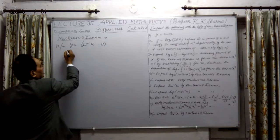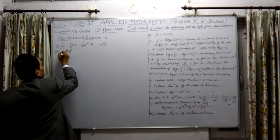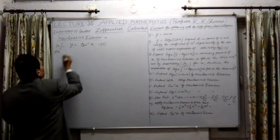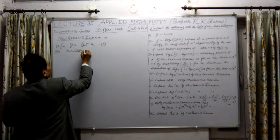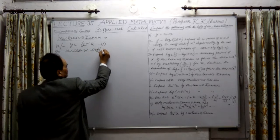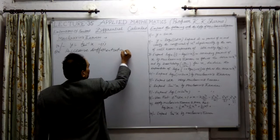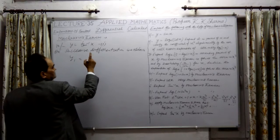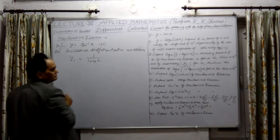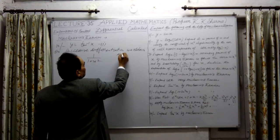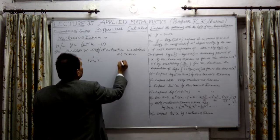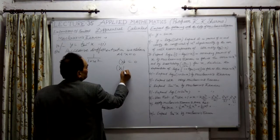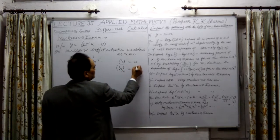Now on successive differentiation we obtain: y1 is equal to tan inverse x, that means 1 upon 1 plus x squared. At x equal to 0, y0 is 0. y1 is 1, because 1 upon 1 with x equal to 0 is 1.